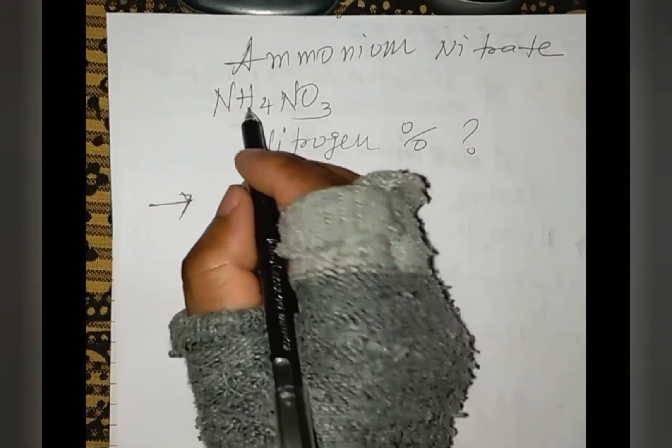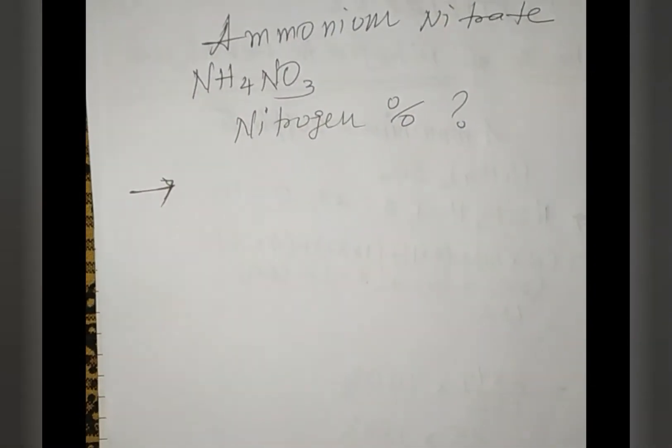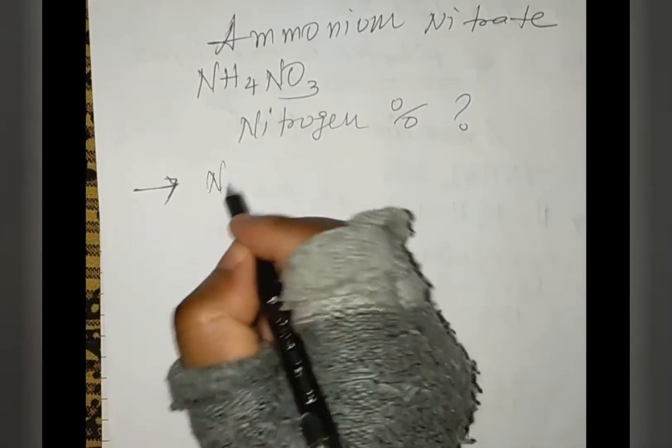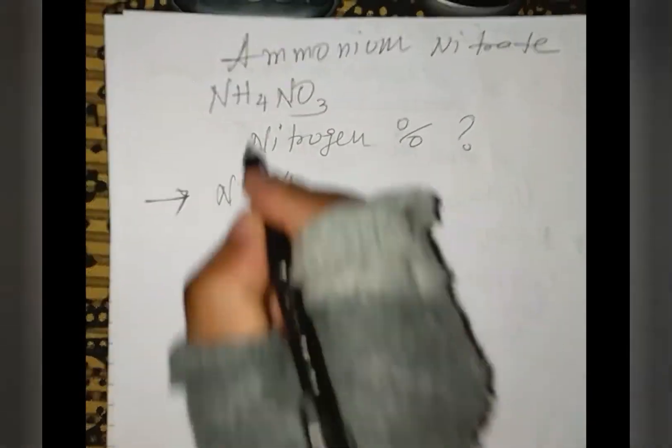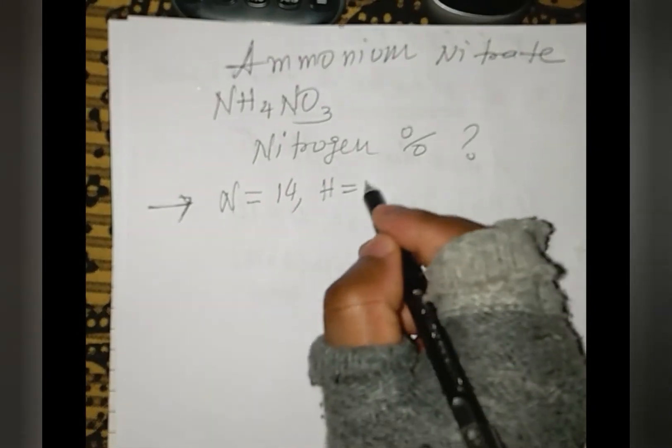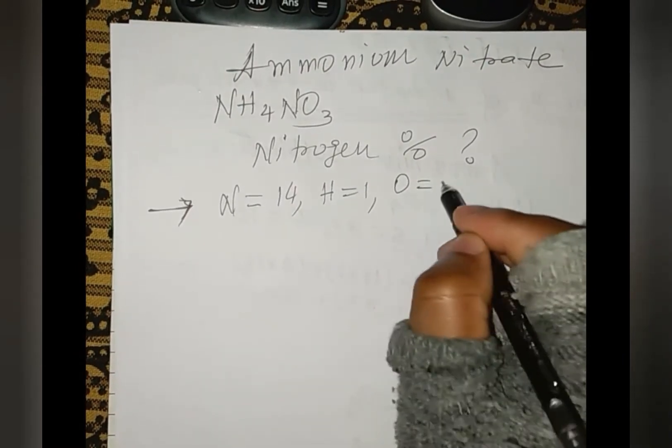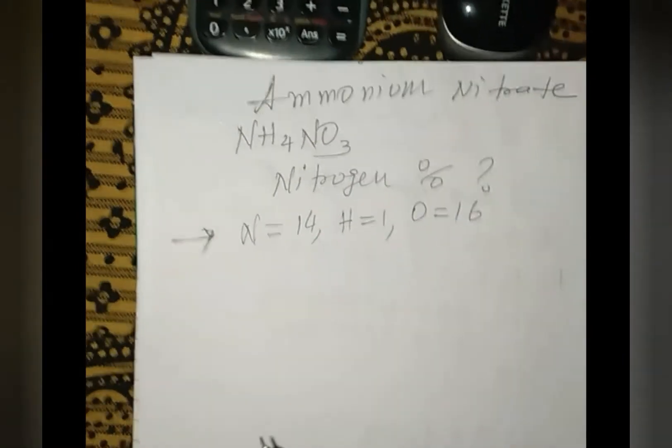We have to find the mass number of each component in the compound - nitrogen, hydrogen, and oxygen. We know that nitrogen has a mass number of 14, hydrogen has 1, and oxygen has 16.